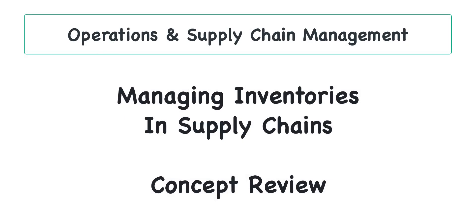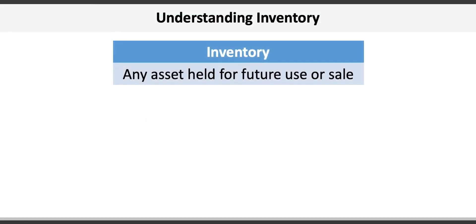This video provides an overview of the key concepts covered in chapter 12: managing inventories and supply chains. Top management needs to understand the role that inventories play in a company's financial performance, operational efficiency, and customer satisfaction, and strike the proper balance in meeting strategic objectives. Inventory can be defined simply as any asset held for future use or sale.